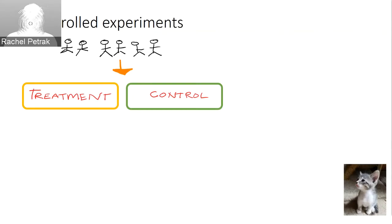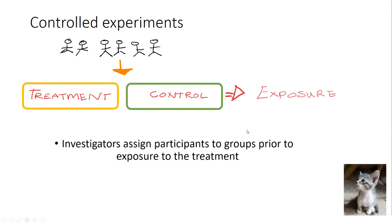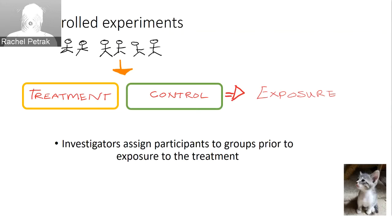The treatment group is the group that receives an intervention, whereas the control group doesn't receive the intervention. A key aspect of a blinded study is that the participants don't know what group they are in. A study is called double blind if the investigators also don't know what group the participants are in. After being assigned to groups, participants are exposed to either the treatment or control condition, and this is different from an observational study, as we'll see.